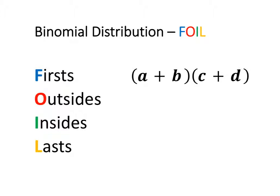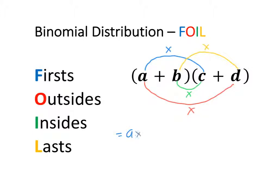So what we're doing is taking our first terms and multiplying them together. Then we're taking our outside terms and multiplying them together, taking our two inside terms and multiplying them together, and then taking our two last terms and multiplying them together. So after we've completed the FOIL method, we'll have four lots of multiplied terms, which equals a times c, plus a times d, plus b times c, plus b times d.